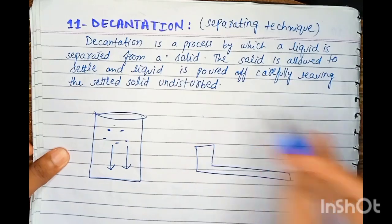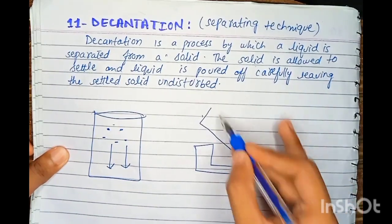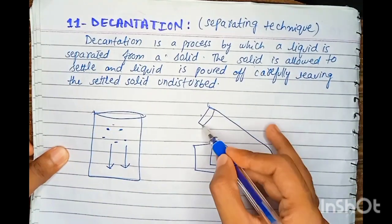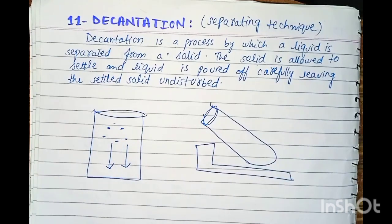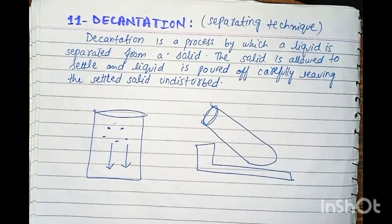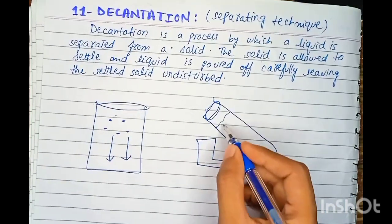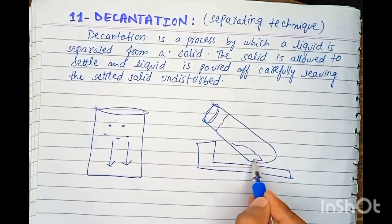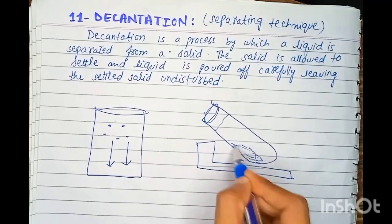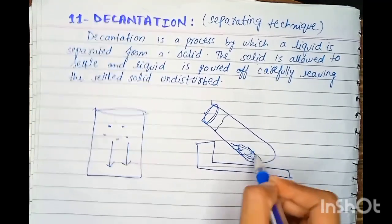We will just separate the liquid. We will set up at 45 degrees. You will take a flask now. This flask requires a liquid. The sediment has the solid precipitate. This is my decantation.